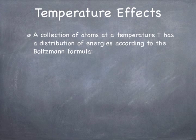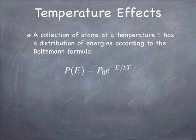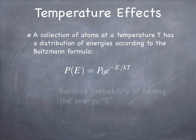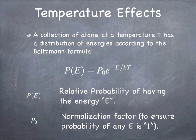Now let's talk about temperature. If you have a bunch of atoms in a system that can take on different energies, the probability of having a particular energy depends on temperature — specifically the formula e to the minus energy divided by kT. If temperature is very high, the probability of having a high energy goes up; if temperature is very low, the probability of having a high energy goes exponentially down. The normalization factor P0 is adjusted so that the total probability of having any energy at all equals one.